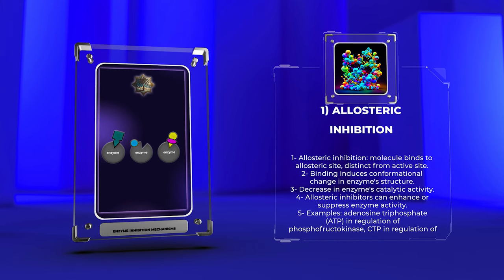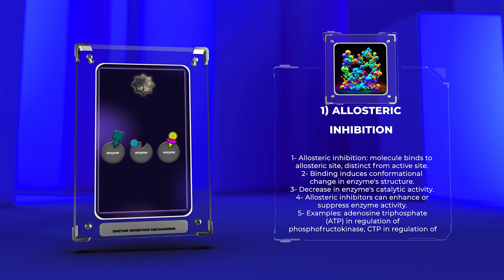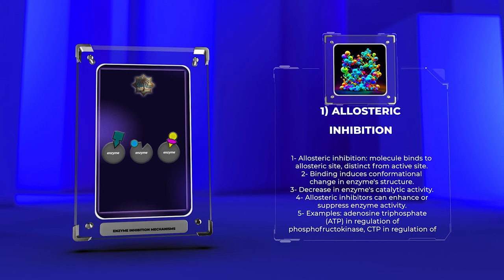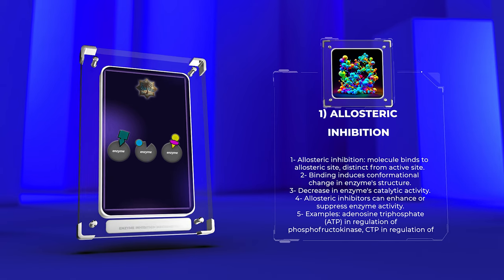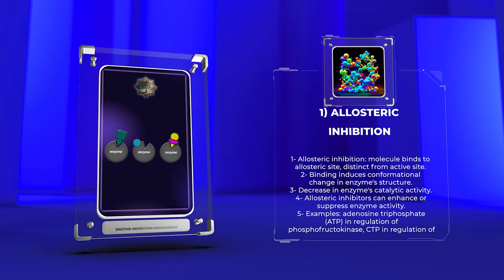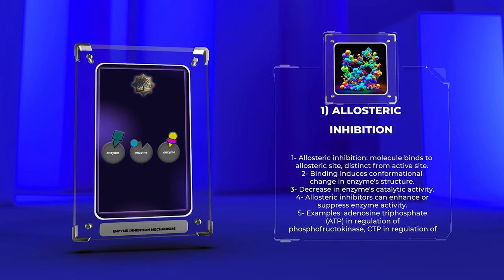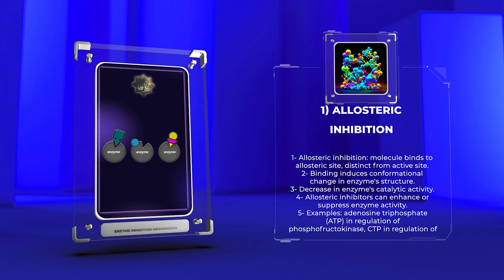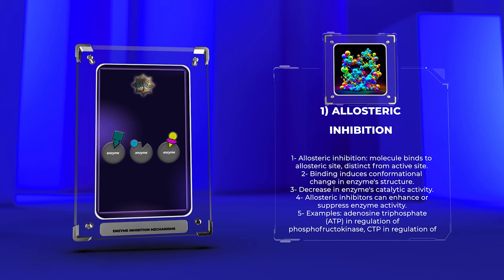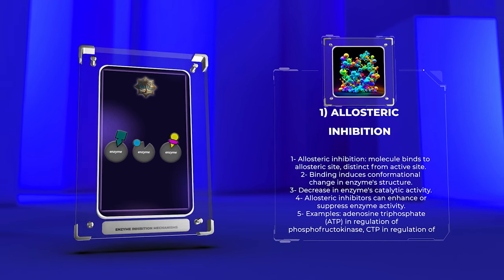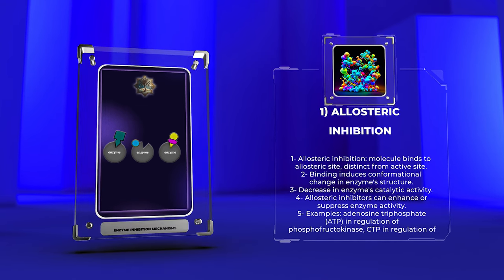The regulatory action of allosteric inhibitors provides a sophisticated mechanism for controlling enzyme activity, allowing for fine-tuning of metabolic pathways. Examples of allosteric inhibitors include adenosine triphosphate (ATP) in the regulation of phosphofructokinase and glycolysis, and CTP (cytidine triphosphate) in the regulation of aspartate transcarbamylase.